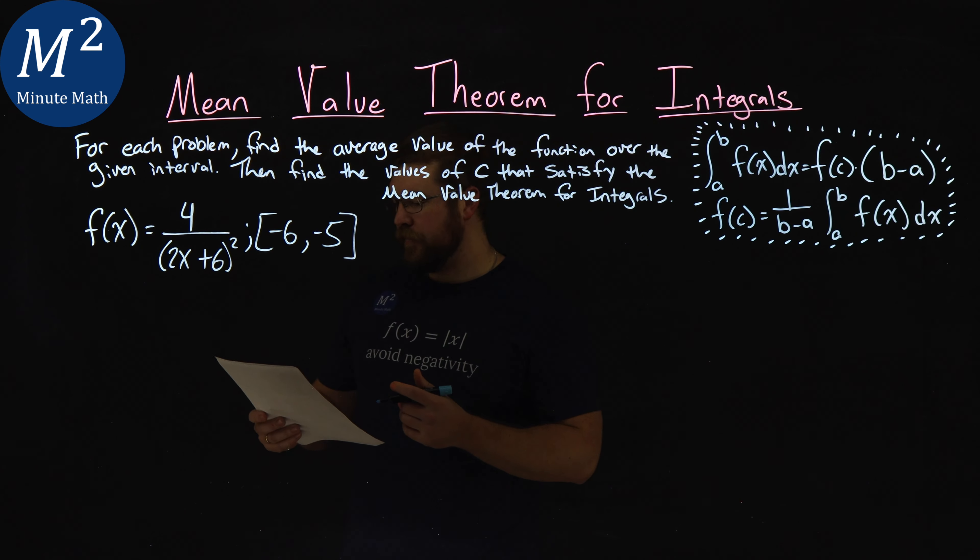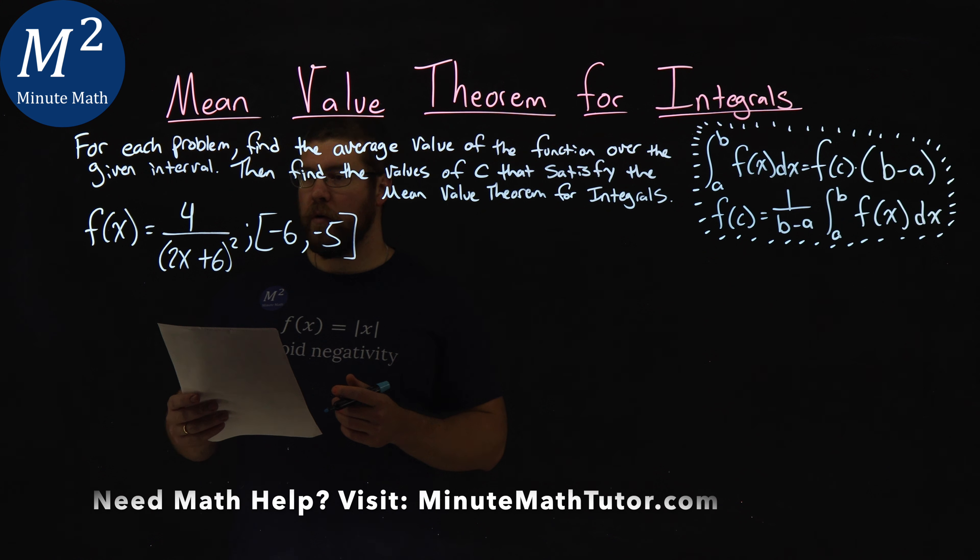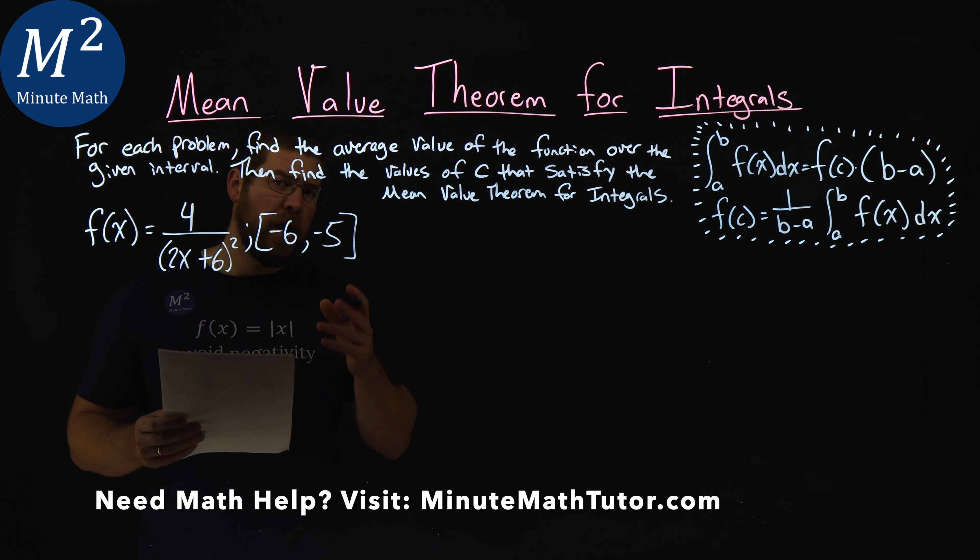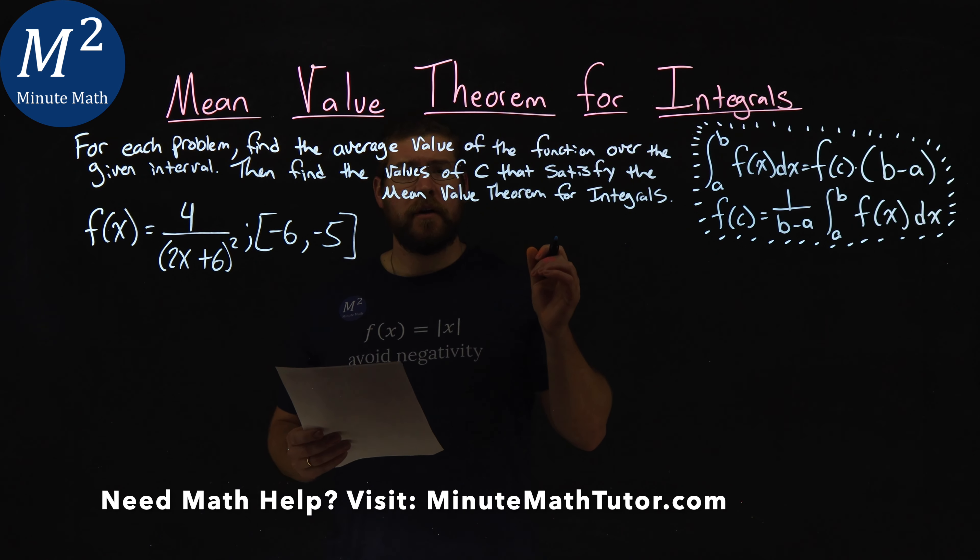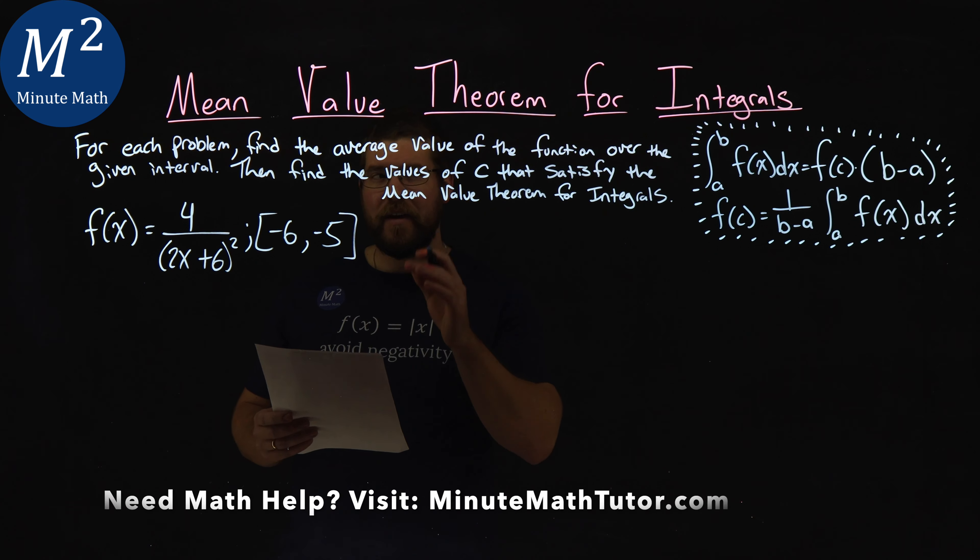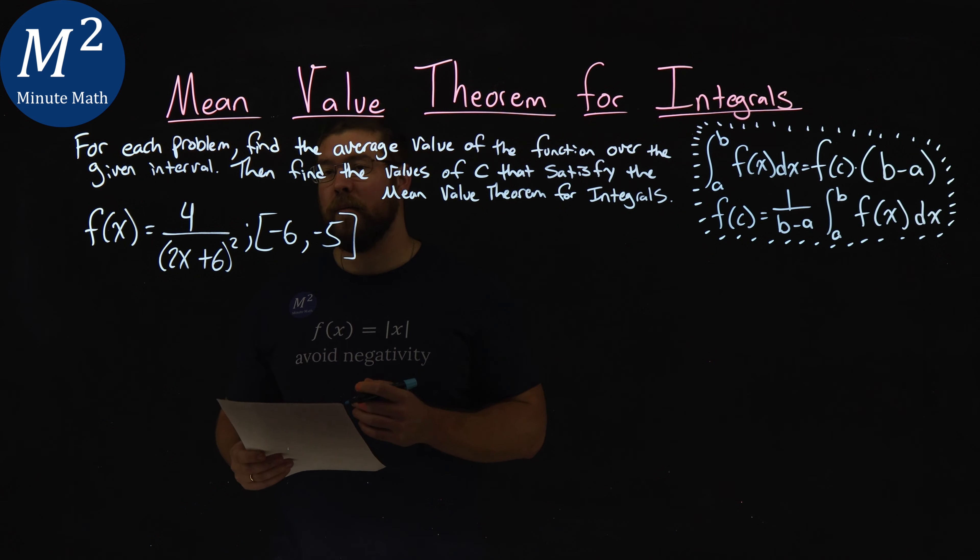We're given this problem right here. f of x equals 4 over 2x plus 6 squared on an interval from negative 6 to negative 5, and we want to find the average value of the function over this interval and the values of c that satisfy the mean value theorem.